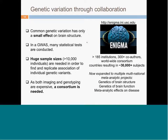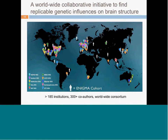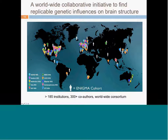With sufficient power we can now ask the questions we're interested in. ENIGMA has expanded to multiple multinational meta-analytic projects, including Genetics of Brain Structure, Genetics of Brain Function, and Meta-Analytic Effects on Disease. It's truly a worldwide collaborative initiative — each site represented by a cohort contributing both imaging and genetic data from around the world — with different working groups for disease meta-analyses. Over 185 institutions and over 300 co-authors contribute to these analyses.